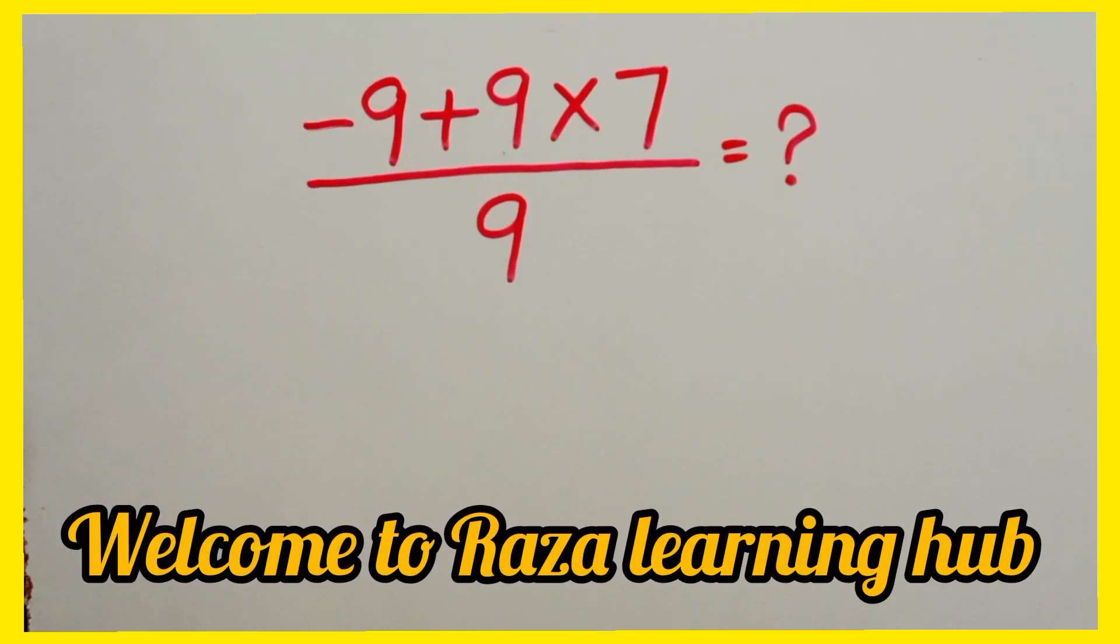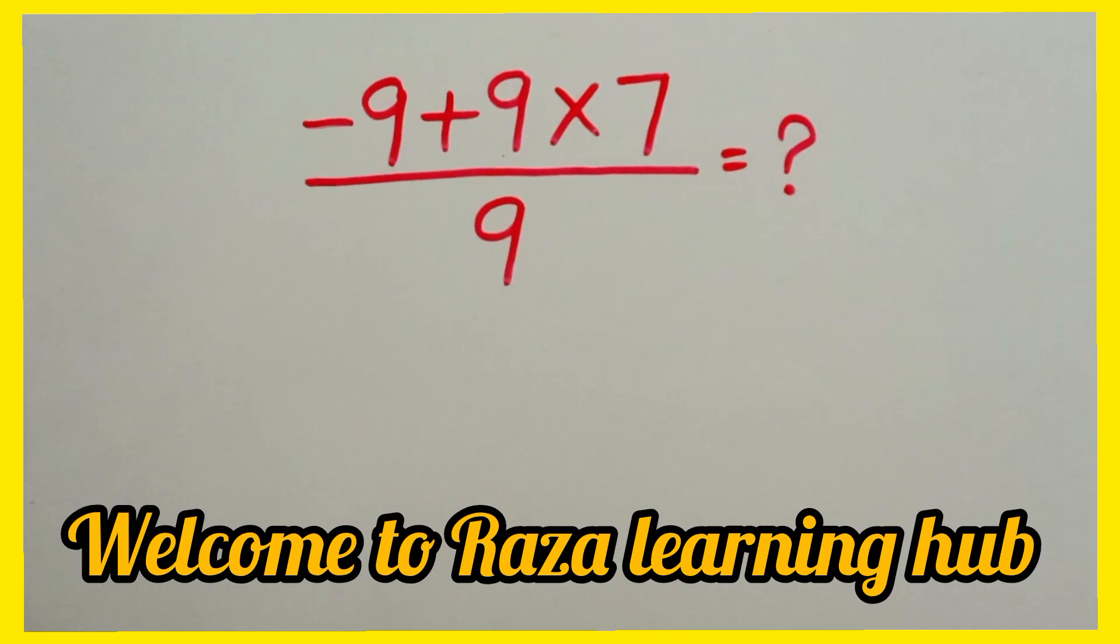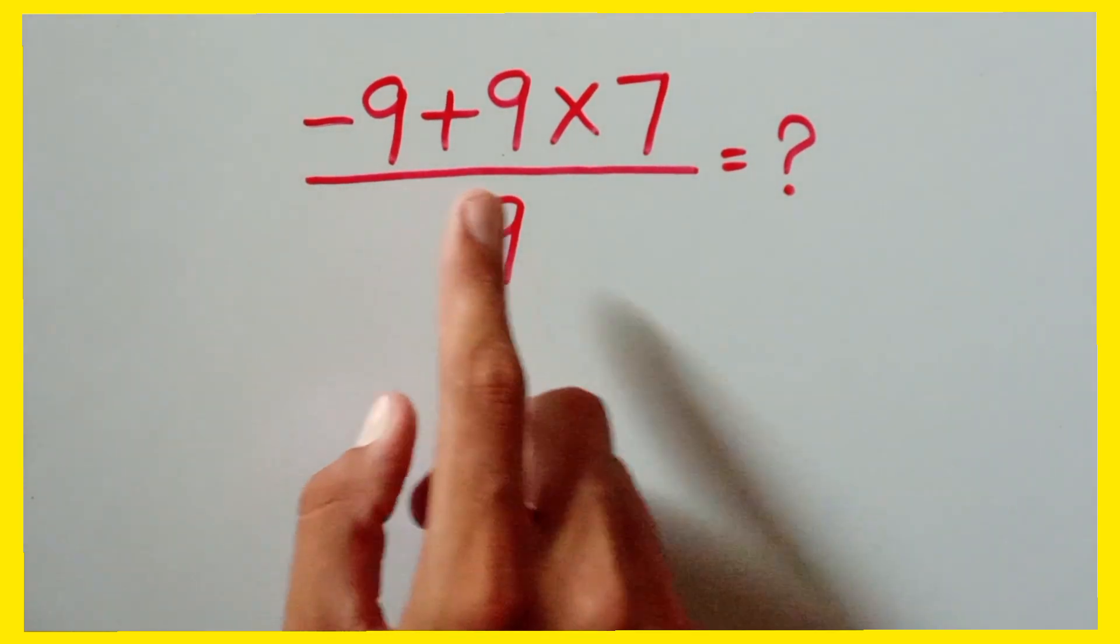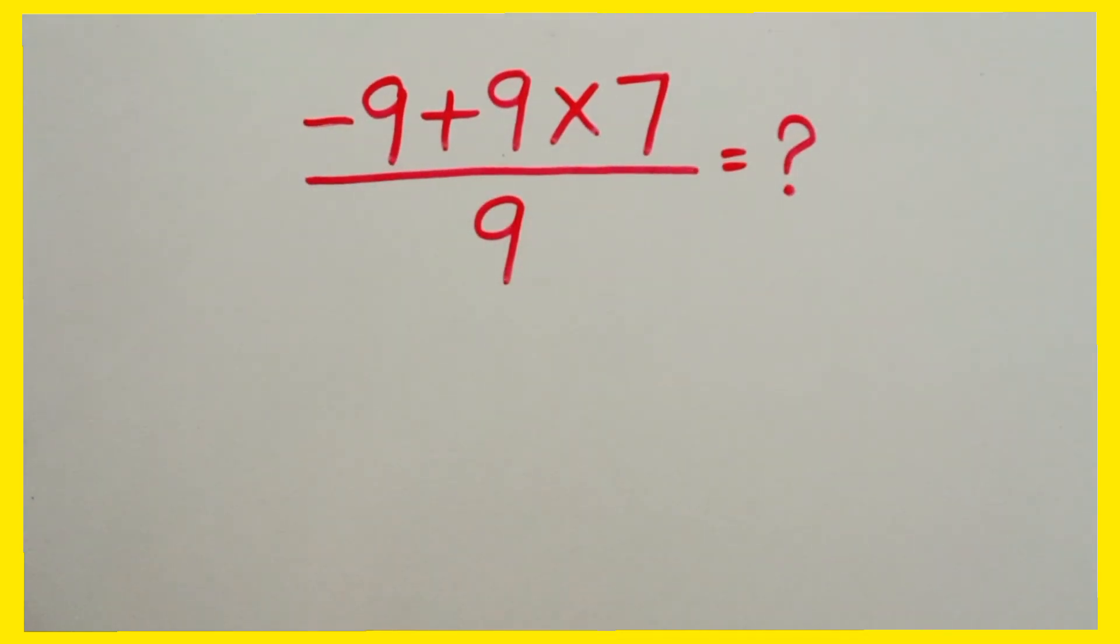Hello guys, welcome to Raza Learning Hub. In this video we can find the value of this expression which is minus 9 plus 9 times 7 divided by 9. So how can we find the value of this expression?